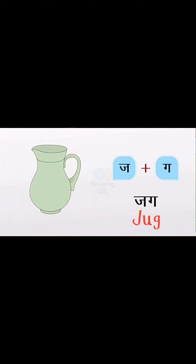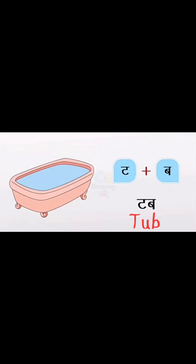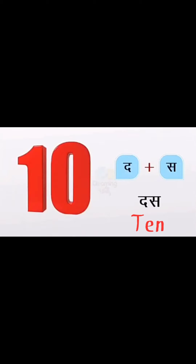Ta plus Ba — Tub. T-U-B. Tub. Da plus Sa — Ten. T-E-N. Ten.